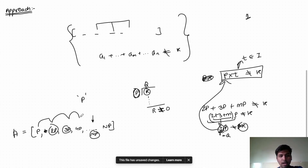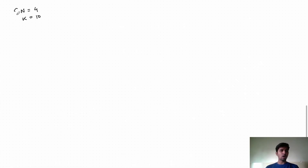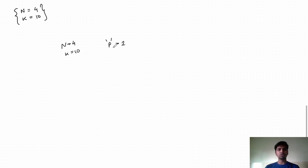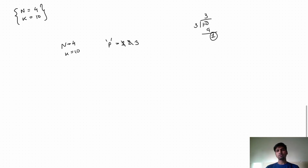Let's dry run our approach for the test case n=4 and k=10. We need to find p. Starting from p=1: 1 divides k successfully, so skip. p=2: 2 times 5 equals 10, so 2 divides k successfully, skip. p=3: 3 times 3 is 9, giving remainder 1, so 3 does not divide k successfully. We take p=3.